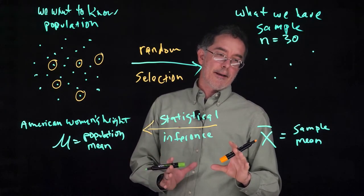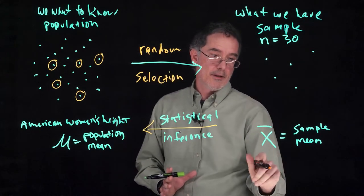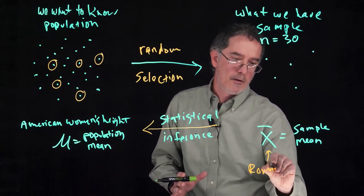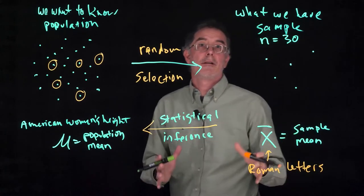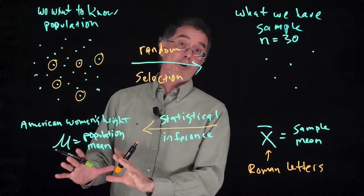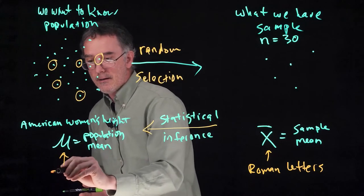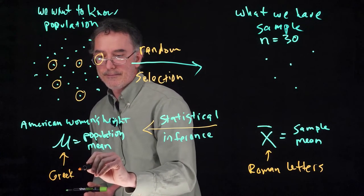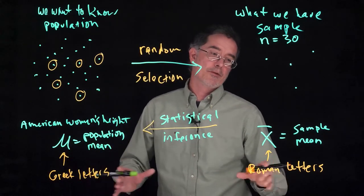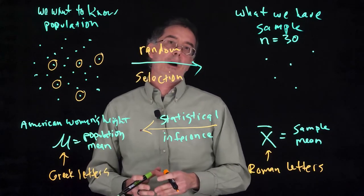Another thing I want to point out is that you'll notice that these symbols for samples like X bar are usually Roman letters, which are just regular English letters that you're familiar with already. Most of the time, the symbols for populations like mu here are going to be Greek letters. There's a few exceptions to this, but as a rule of thumb, it's pretty much usually the case that Roman letters are sample symbols and Greek letters are population symbols.